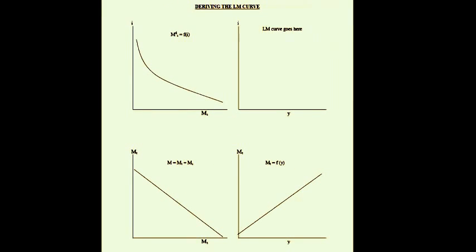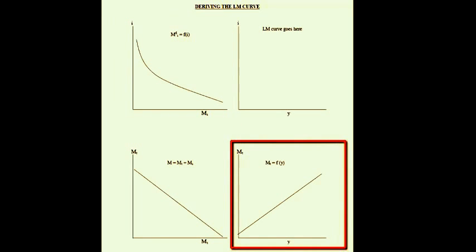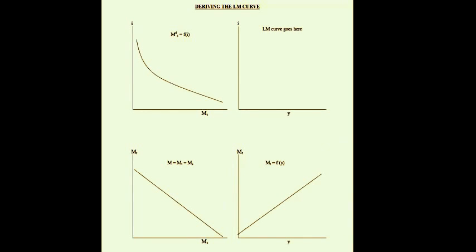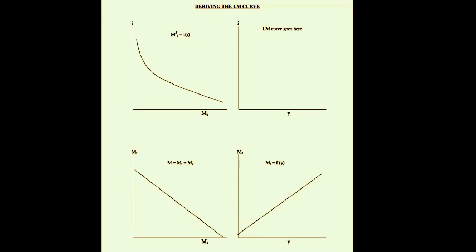In the monetary sector, we derive the LM curve based on the ideas that the speculative demand for money is an inverse function of the interest rate and the transactions demand for money is a positive function of output. An adding-up equation states that the supply of money equals the sum of transactions demand and speculative demand at equilibrium — two reasons individuals hold money. When we combine this information, we trace out what is known as the LM curve.